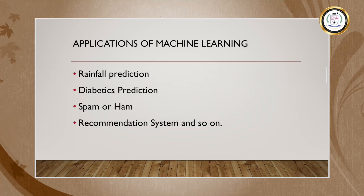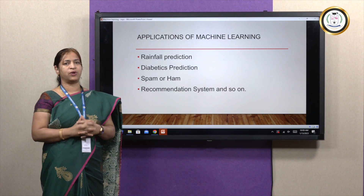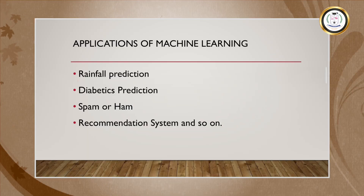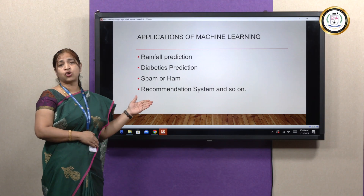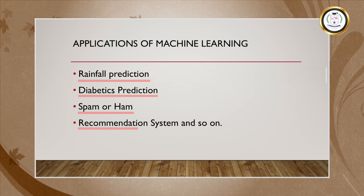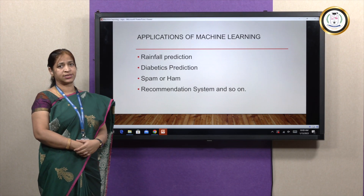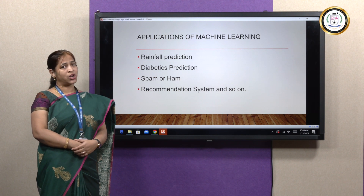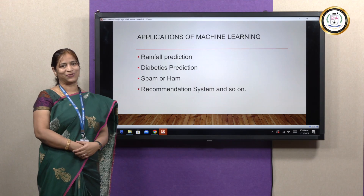Let us see the applications of machine learning. Machine learning can be useful in various fields nowadays. Some examples are rainfall prediction, diabetics prediction, spam or ham email classification, recommendation systems, and so on. Hope you enjoyed the session and we will see you in the next video lecture. Thank you.